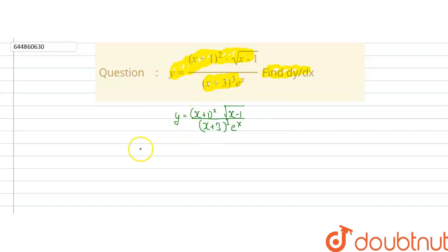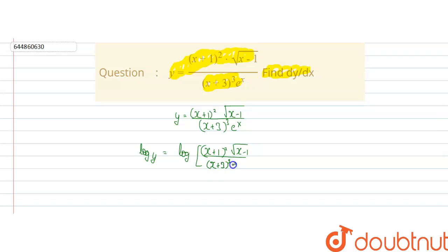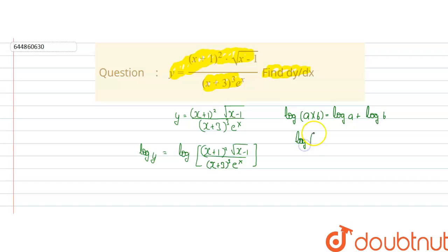What we do is take log on both sides. So by taking log on both sides we will get log y equal to log of the whole expression. We know the property of log which says log a times b is equal to log a plus log b. The other property we can use here is log a divided by b is equal to log a minus log b. Using these two properties we will open this log.